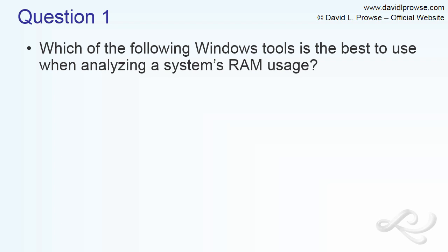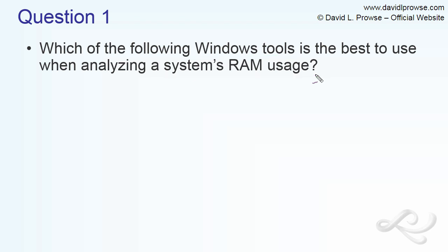We want to analyze the question and make sure that we're looking at everything in it. For example, it says Windows tools and system's RAM usage. Watch for the key phrases and key words when looking at these questions. Really analyze the question before you even go into the possible answers.